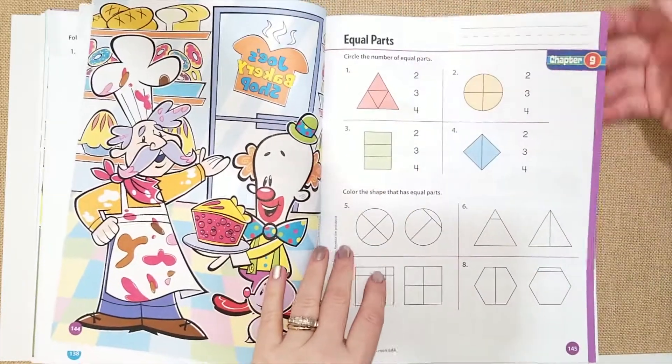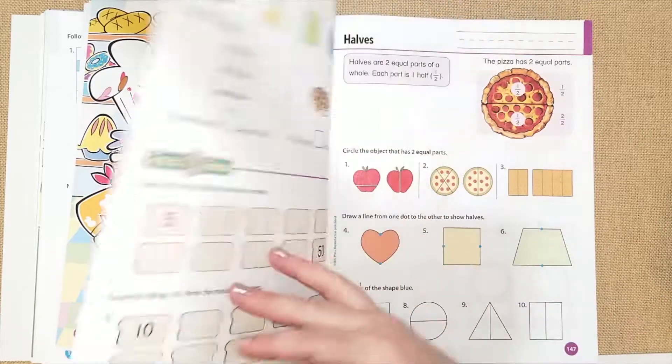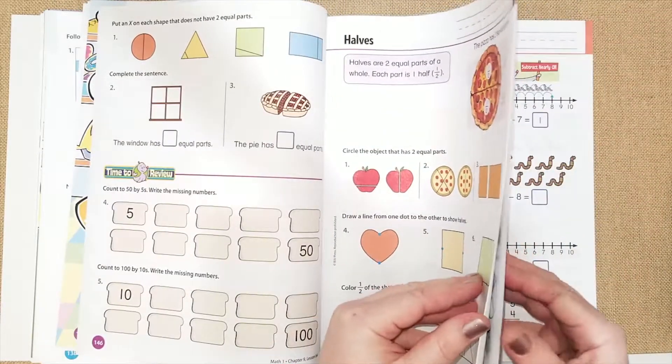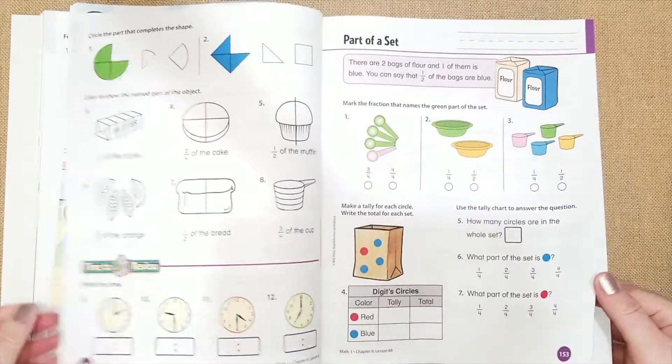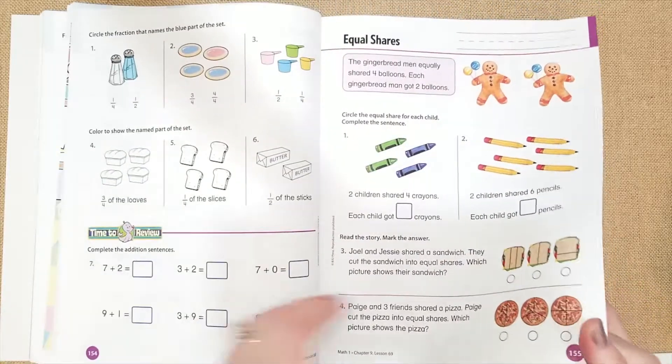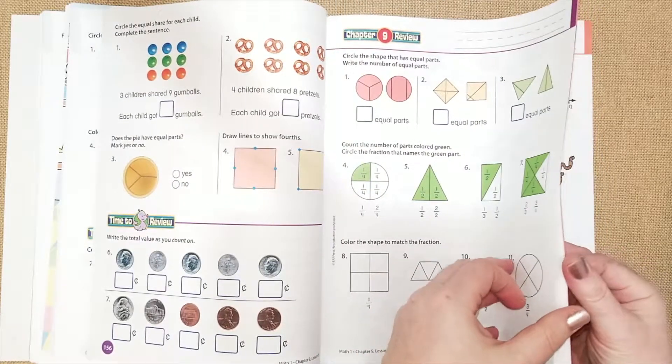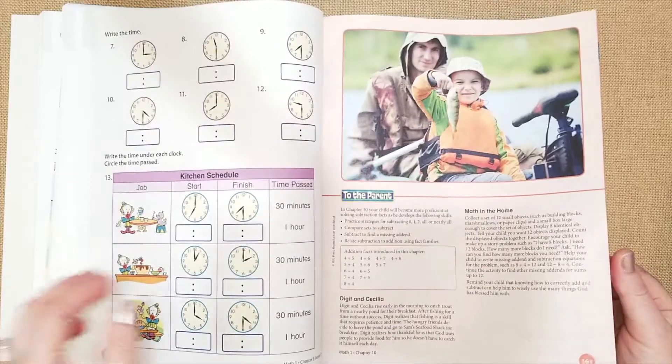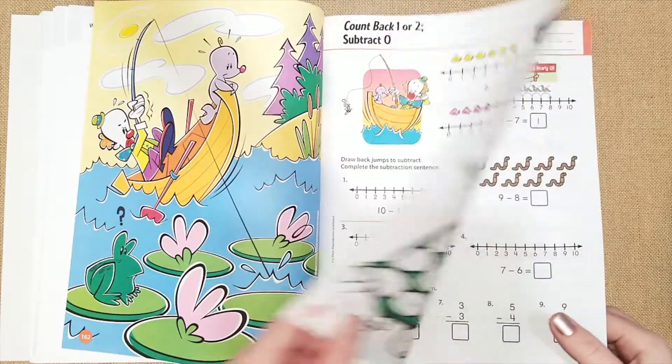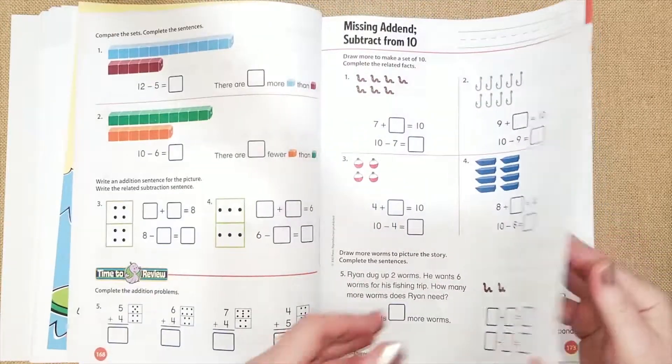Then they have a review. And then chapter nine, they're talking about fractions, which is what I really want her to master, just the basics of fractions. And I want her to really understand her time and her money for her first grade and adding and subtracting. If she can memorize some addition facts and subtraction facts, that would be great as well.